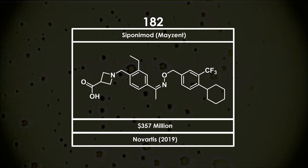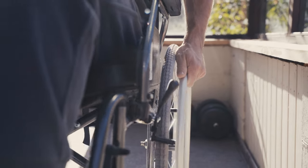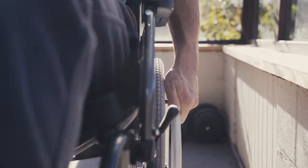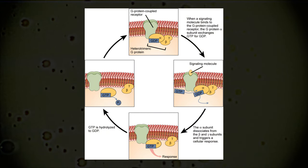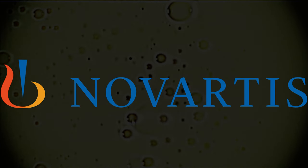Siponimod is a treatment for the autoimmune disease, multiple sclerosis, and is a functional antagonist of the sphingosine 1 phosphate receptor. This is a G-coupled protein receptor, which is a class of receptors commonly targeted with pharmaceuticals. It was developed by Novartis and was approved for use by the FDA in March 2019.